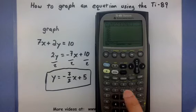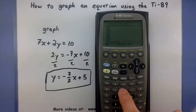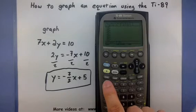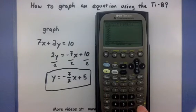negative 7 divided by 2, close parentheses. That will make sure that the fraction is read correctly. Now I'll put in my x plus 5 and enter.